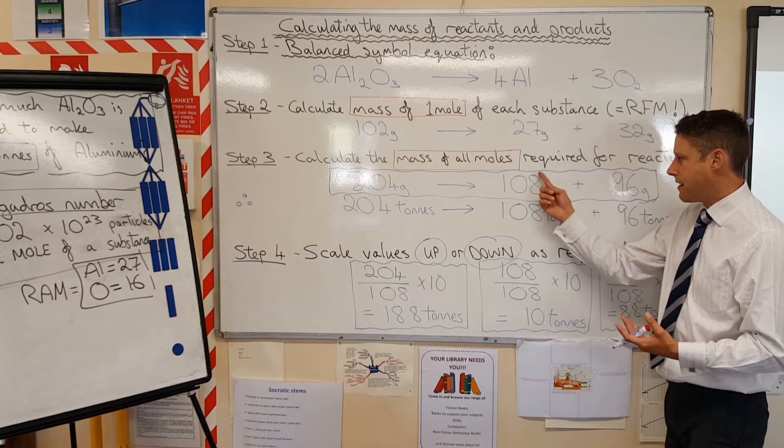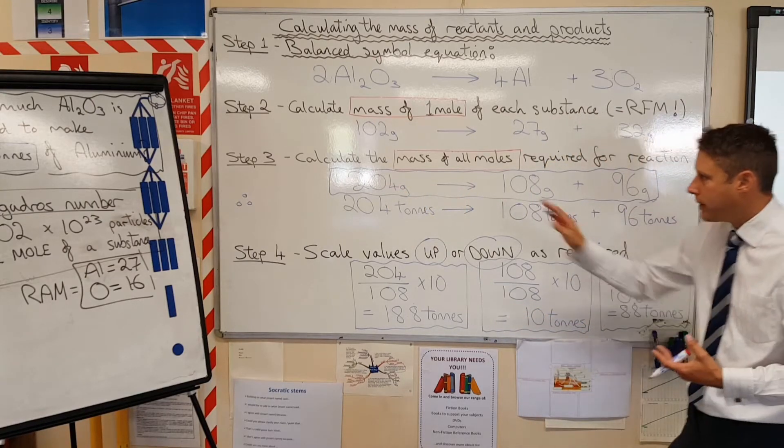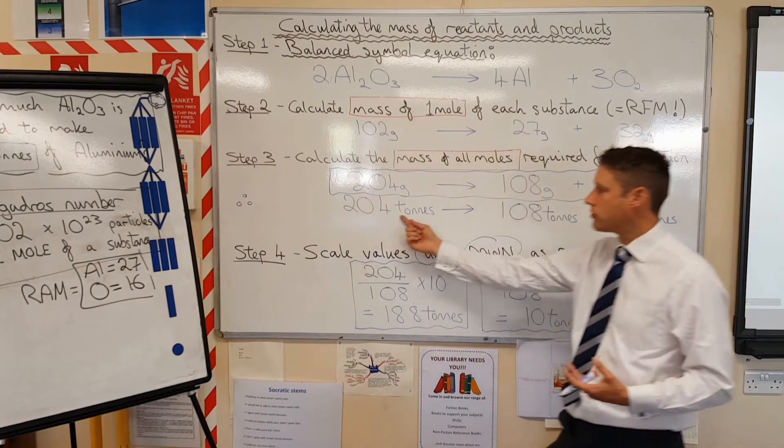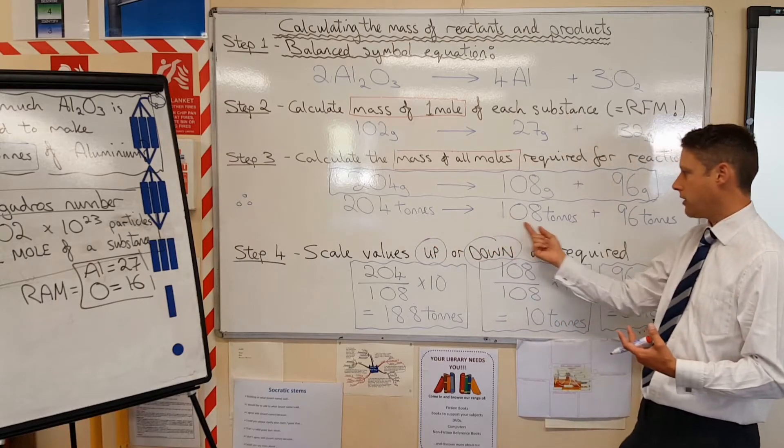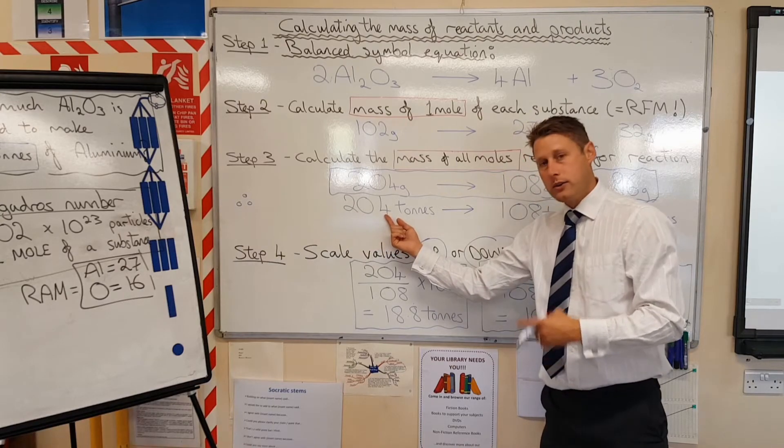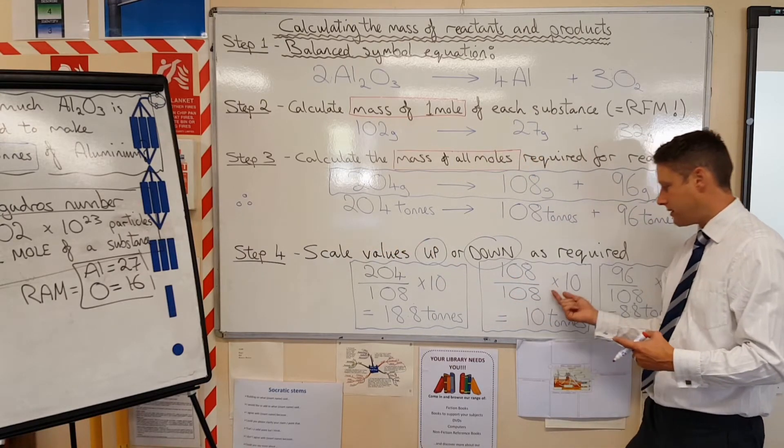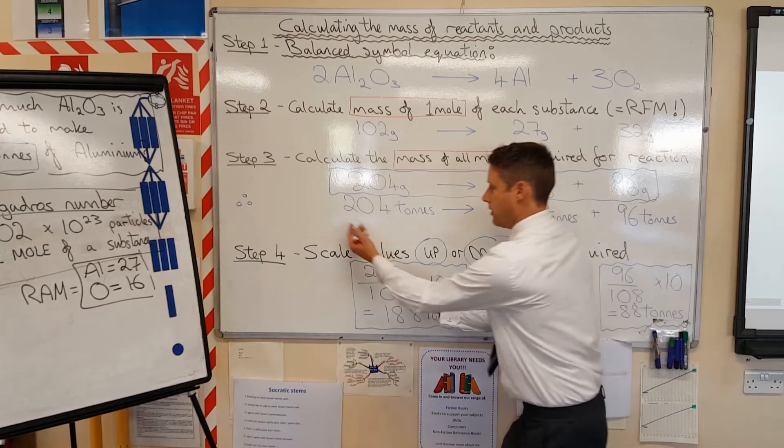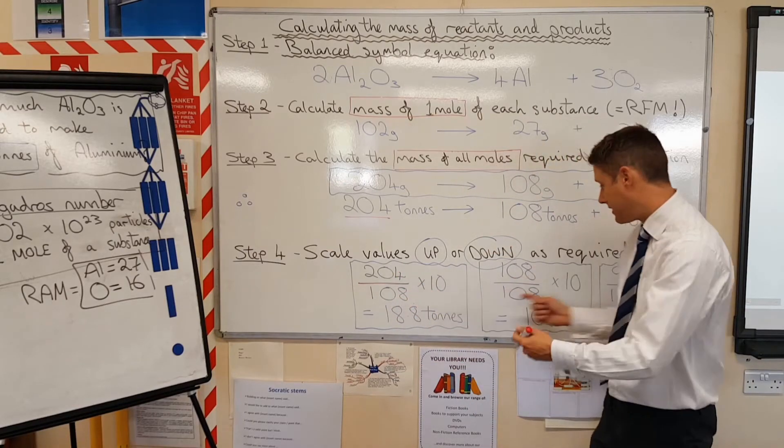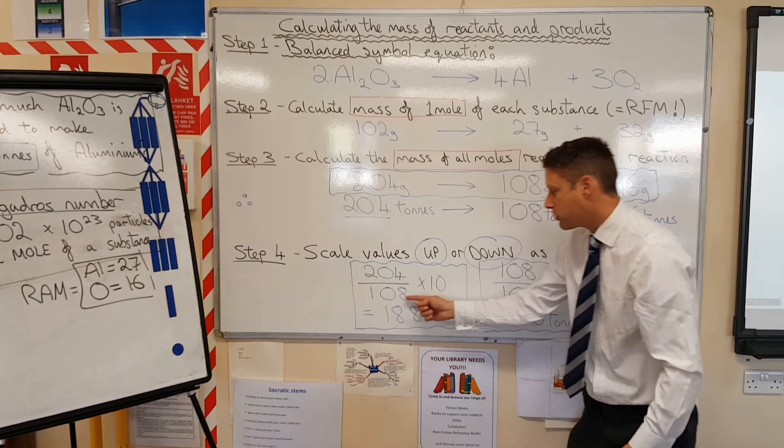We've just got to do the same thing for each other part of the reaction. So we're going to go straight in for the kill. That is the aluminum oxide. We need 204 tonnes to make 108 tonnes of aluminum. So, we're going to do the same thing down here. 108 divided by 108 times 10, we're just going to take our 204 tonnes, and we're going to divide that by 108, so it's divided by the same factor as this one is. And we're going to multiply it by 10.